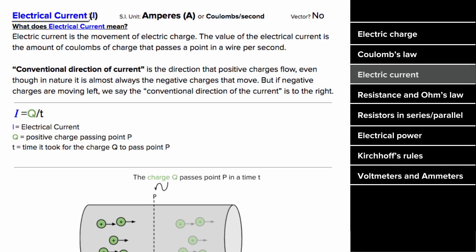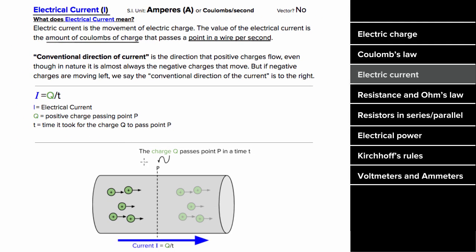The electrical current I tells you the amount of Coulombs of charge that passes a point in a wire per second. So if you watch some point in a wire and you count how many Coulombs of charge pass by that point per second, that would be the current. In equation form, the current I is gonna be the amount of charge that flows past a point in a wire per time. This gives the units of I as Coulombs per second, which we abbreviate as an ampere. And since charge and time aren't vectors, current is not a vector either.